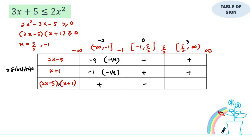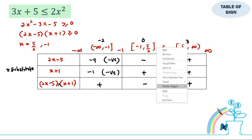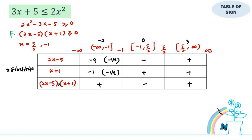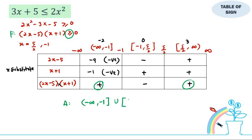Since our inequality requires the expression to be positive, we take the regions where the product is positive. Our final answer is: negative infinity up to negative 1 included, union with 5 over 2 included up to infinity — the same as what we obtained using the real number line method. Both methods are applicable.